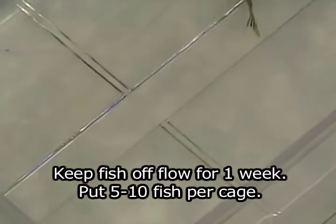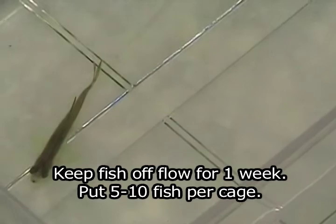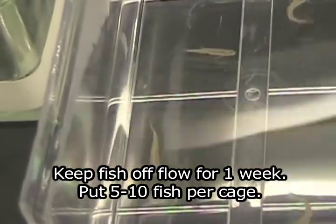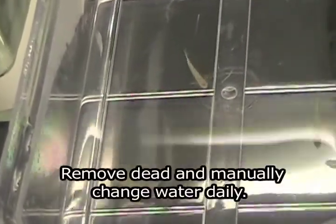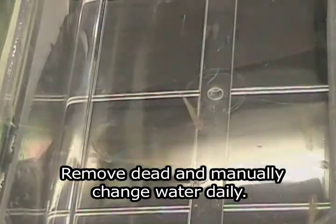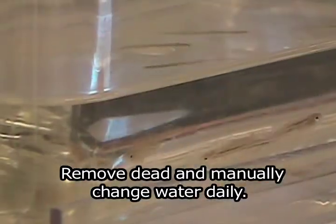Keep fish off flow for one week to avoid infection. Keep about 5 to 10 fish per cage, removing dead each day, and manually change water each day.